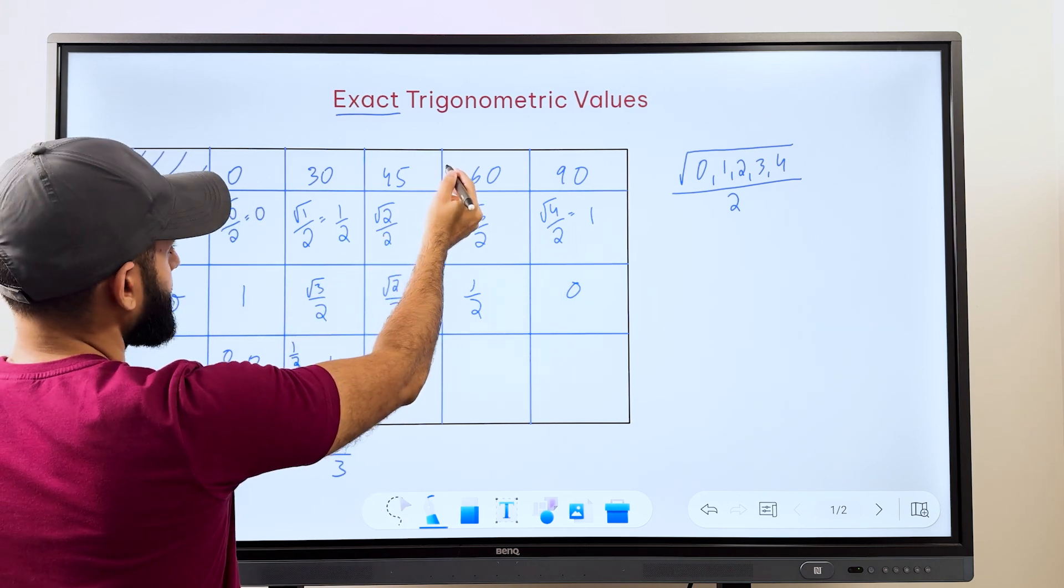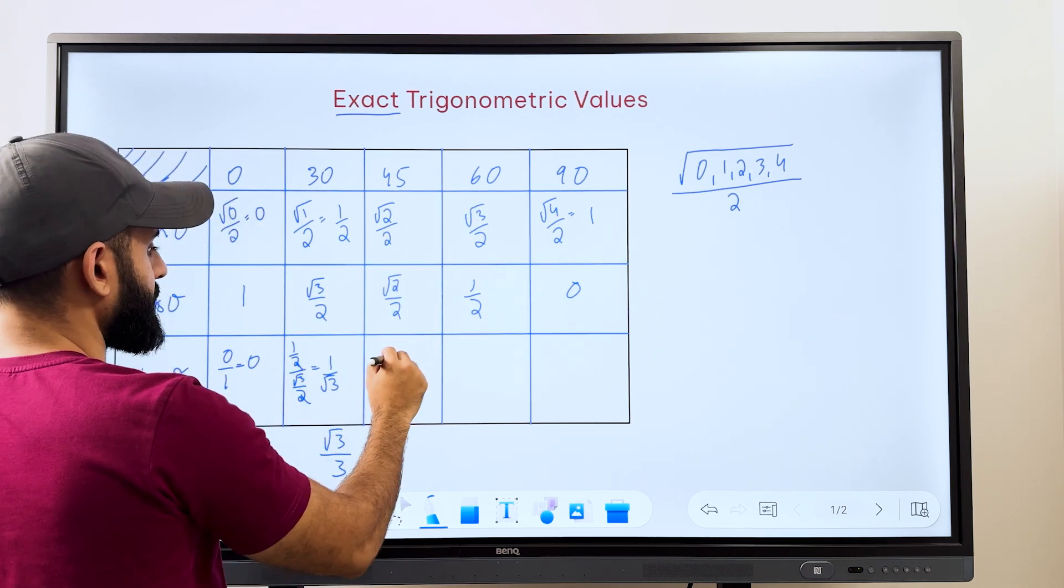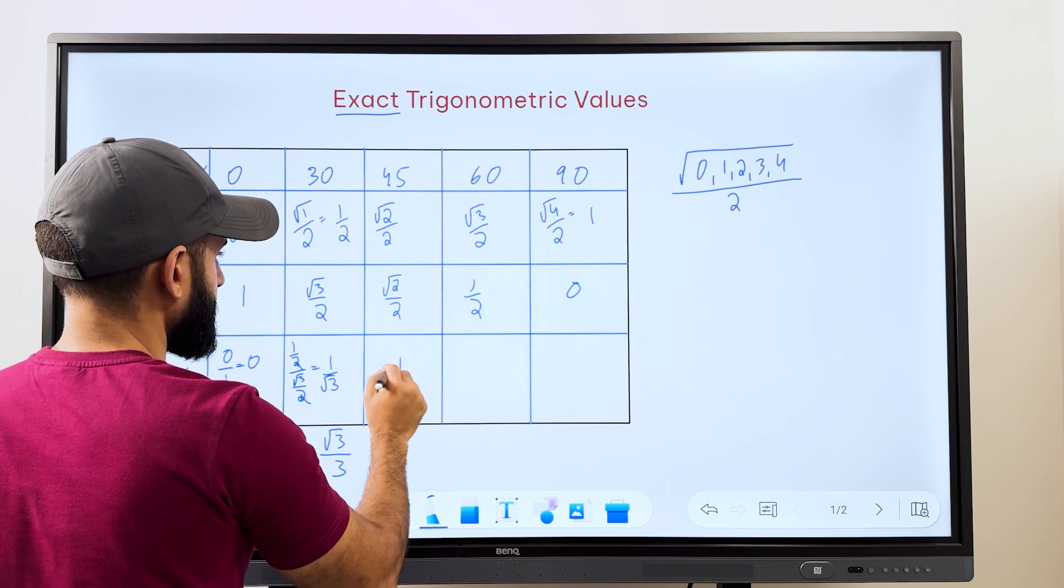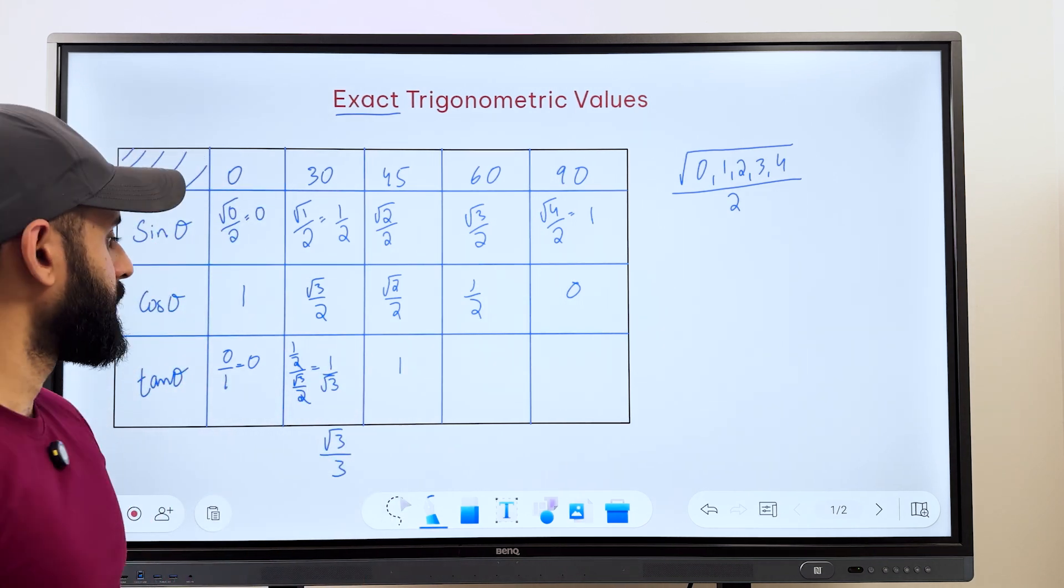Now for tan 45, we take the value of sin 45 divided by the value of cos 45. They're both exactly the same as you can see. Therefore, the answer will be 1.